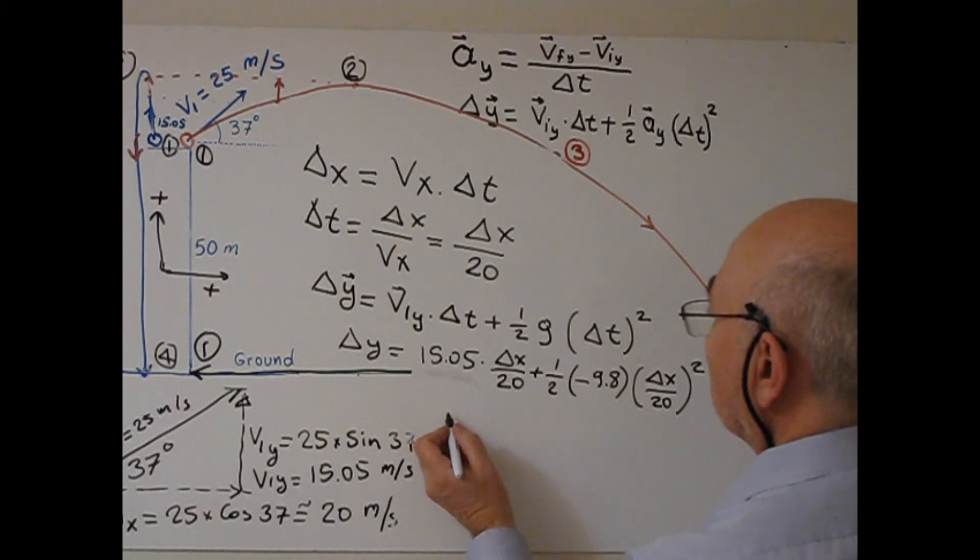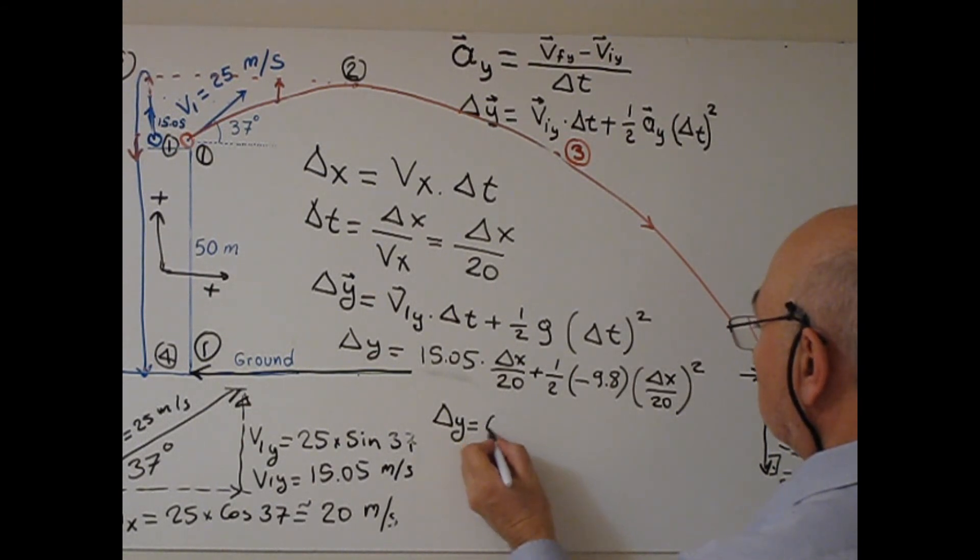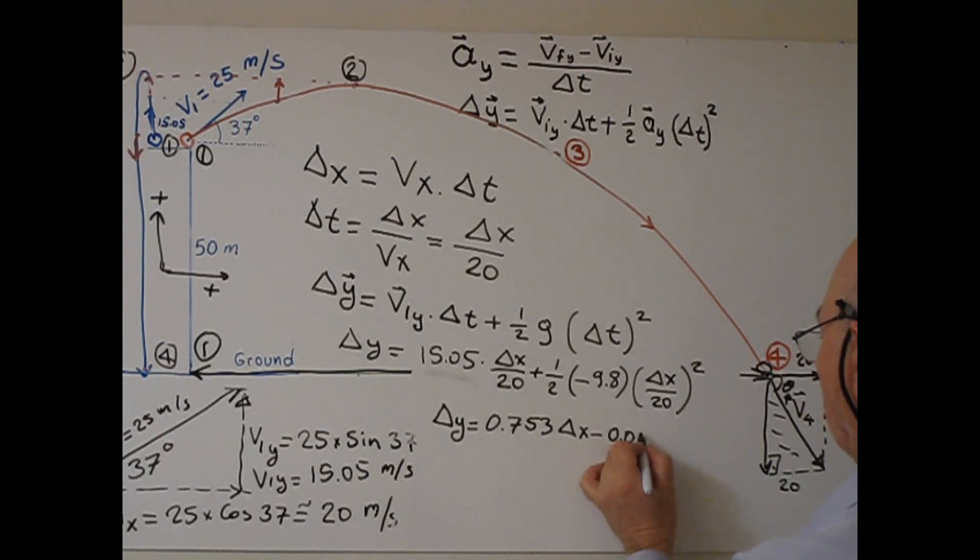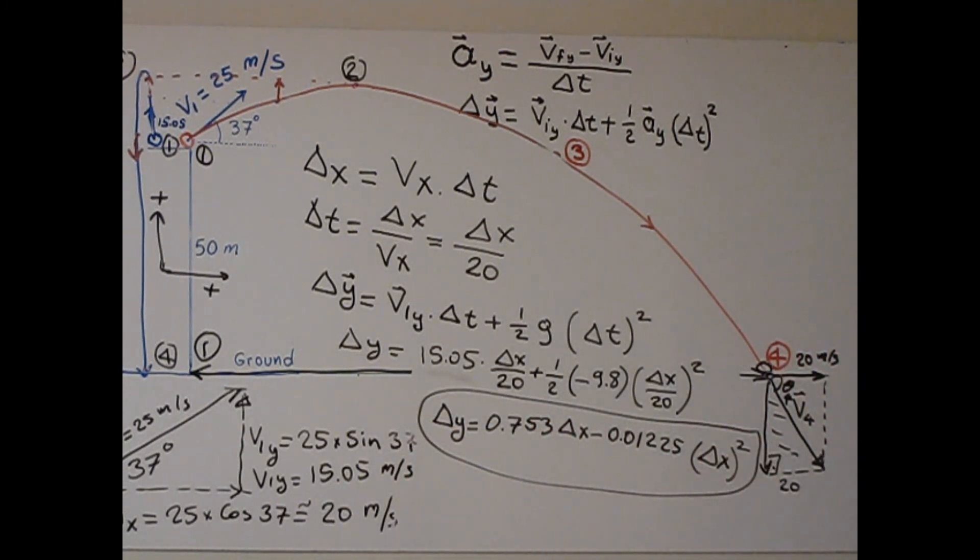If I work on this equation, we get 0.753 delta x minus 0.01225 delta x squared. As you know, this is the formula for a parabolic equation. In fact, you don't need to know this, it's just extra. Horizontal displacement will be the independent variable, and vertical displacement will be the dependent variable.